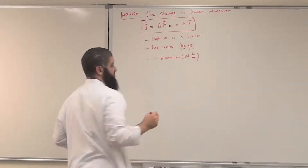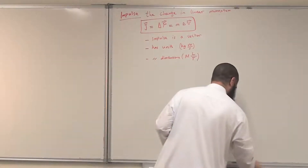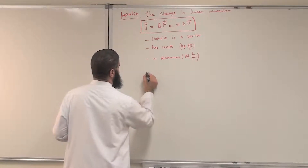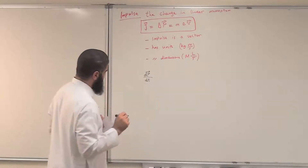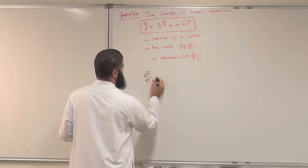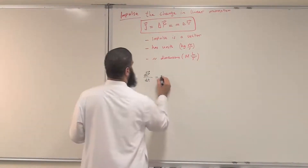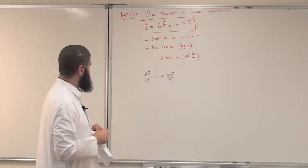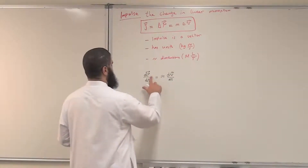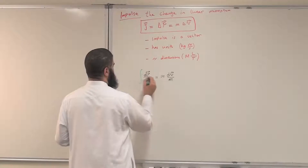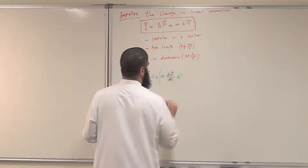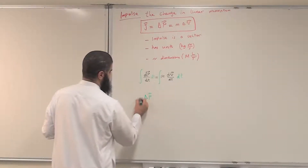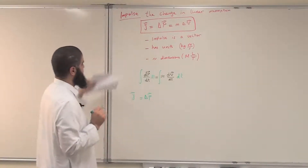Let us now have another look at the impulse. We can start from Newton's second law: F equals dP by dt. The rate of change of linear momentum with respect to time is nothing but M dV by dt, or MA. If we integrate both sides with respect to time, on the left-hand side we get delta P, which is nothing but the impulse as we defined it.